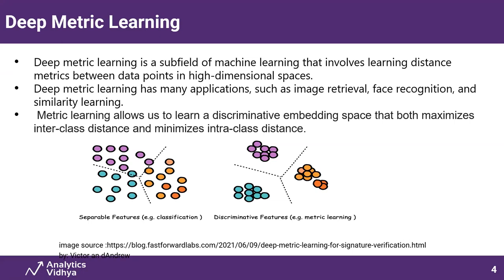In deep metric learning, consider the image retrieval process where in an e-commerce site you want to search for a product. When you upload a picture, it is sent to the model, which gives an encoded vector. You then find the distance between that vector and product vectors already stored in the database. When you find the nearest distances, you get the five or ten most similar products and can return those similar images.